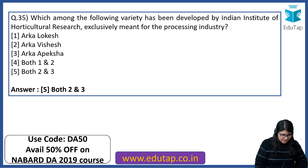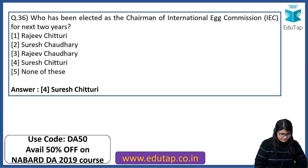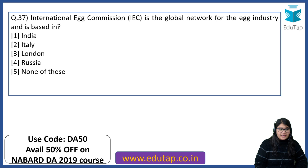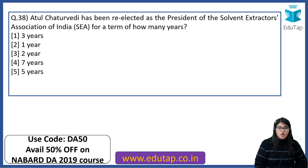I can see Lokesh, Shubhodeep, Kans and Vinita answering regularly — very good that you are practicing these questions. Who has been elected as chairman of the International Egg Commission for the next 2 years? The answer is Suresh Chitri. The International Egg Commission is a global network for the egg industry and it is based in London. Atul Chaturvedi has been re-elected as president of the Solvent Extractors Association of India for a term of 3 years.